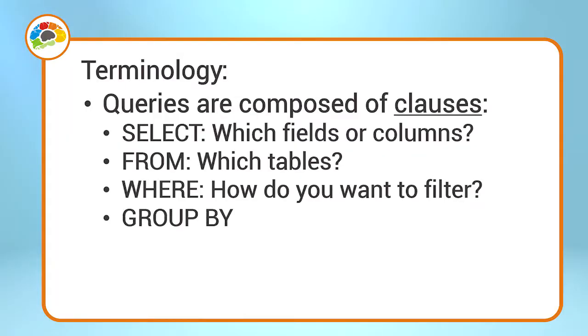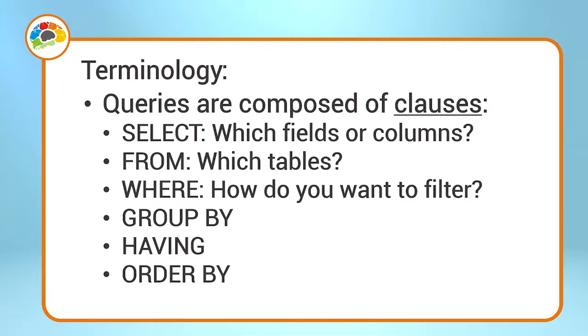Then you have GROUP BY, which we'll get into detail on later, but it is used when you want to create subtotals in your data. HAVING goes along with GROUP BY, but HAVING is a lot like WHERE — it's setting up criteria, but it's only used on the grouped data. And then the last one is ORDER BY. What would you think that's used for? I'm assuming that's to sort the results. Exactly. So these are your statements that you're going to use in a select query, and we're going to go through each one in detail. Keep in mind that they have to come in this order if you're going to use them. The SELECT and FROM clauses are required, but the other ones are optional.